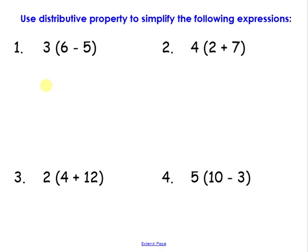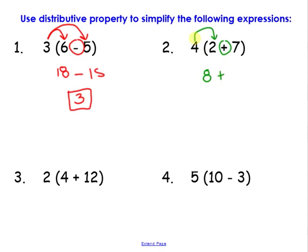Quick review from last time. Let's use the distributive property to simplify these expressions. I see parentheses, which is going to tell me forwards distributive property. So 3 times 6 is 18, bring down the operation which is minus, 3 times 5 is 15. 18 minus 15 is going to be 3. Let's try another one: 4 times 2 is 8, bring down the operation which is plus, 4 times 7 is 28. 8 plus 28 is going to be 36.